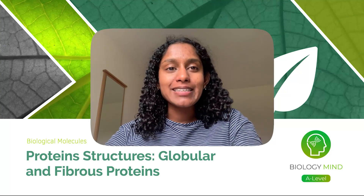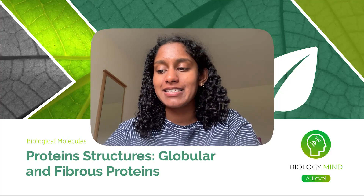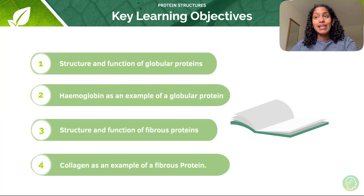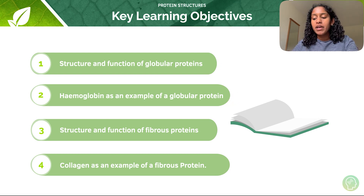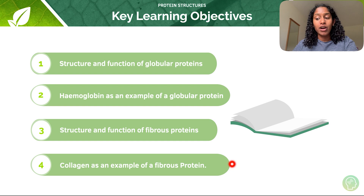Hello everyone and welcome to this BiologyMind A-level tutorial on protein structures, in which we'll be having a look at globular and fibrous proteins. Our key learning objectives for today are: one, the structure and function of globular proteins; two, haemoglobin as an example of a globular protein; three, the structure and function of fibrous proteins; and four, collagen as an example of a fibrous protein.